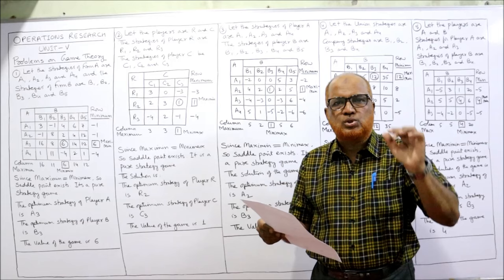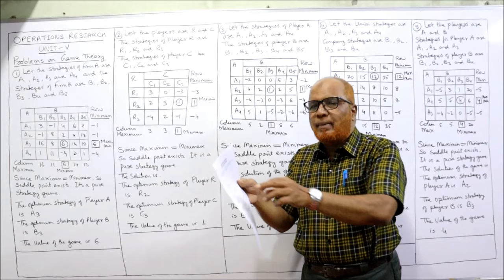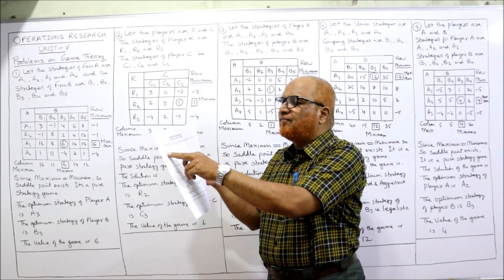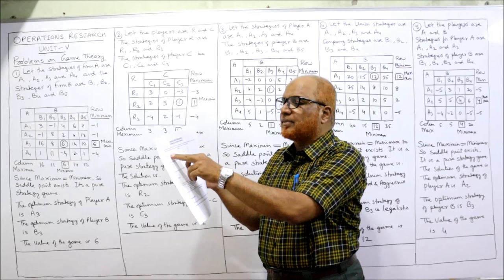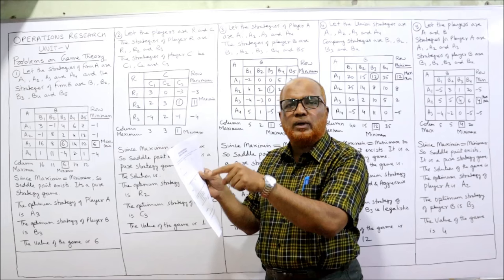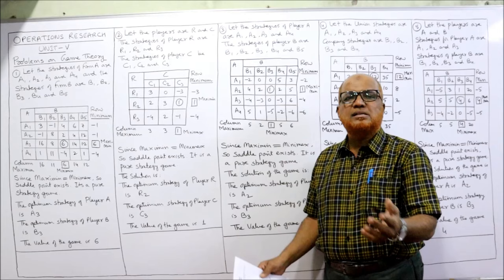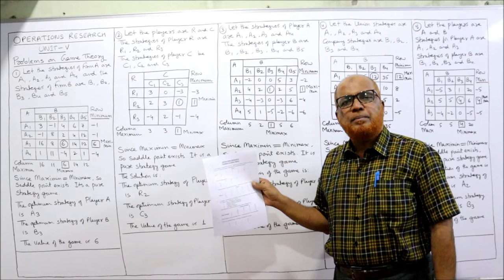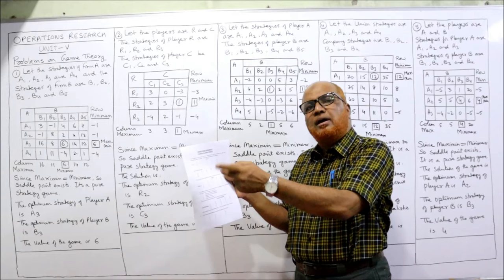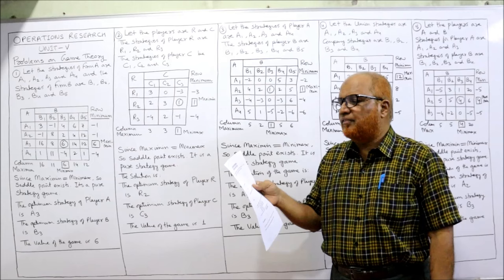In the matrix, the first value is 3 — if firm A adopts the first strategy and firm B also adopts the first strategy, then 3 is the gain to A and 3 is the loss to B. The row player is the maximizing player and the column player is the minimizing player. The strategies for firm A are a1, a2, a3, a4 (four rows), and firm B has b1, b2, b3, b4, b5 (five columns).